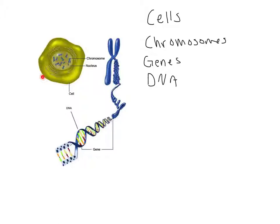Your body actually replaces most of its cells every year. So the cells you have today are probably not the cells you're going to have a year from now. The way that these cells know how to reproduce themselves is they each have kind of like an instruction manual inside of them.